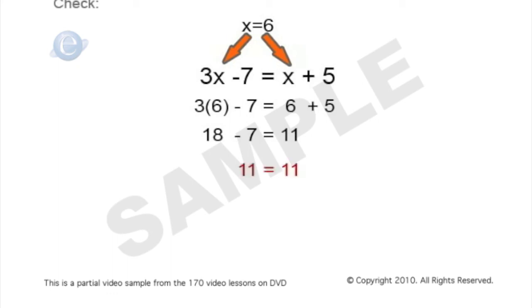So I have 11 is equal to 11. That is obviously true. So I know my value x is equal to 6 is correct.